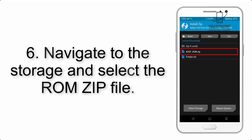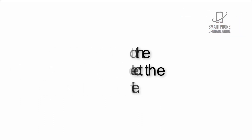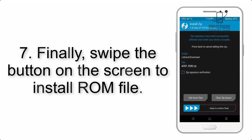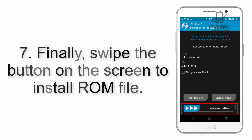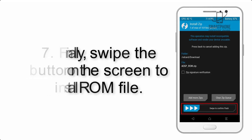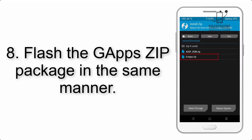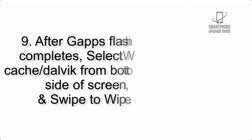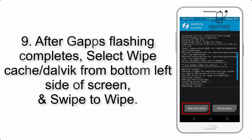Step 6: Navigate to the storage and select the ROM zip file. Step 7: Swipe the button on the screen to install the ROM file. Step 8: Flash the GApps zip package in the same manner.